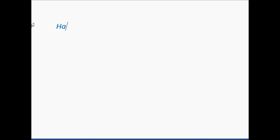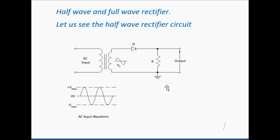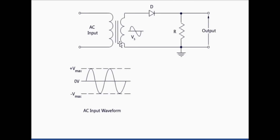Half wave and full wave rectifier. Let us see the half wave rectifier circuit. AC input is given through the transformer and it is supplied to the diode D, and output is taken from these two points through the resistance.